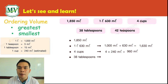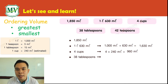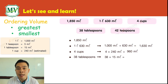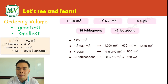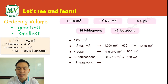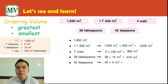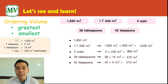Next, 38 tablespoons: 1 tablespoon equals 15 milliliters, so 38 multiplied by 15 equals 570 milliliters. Next, 42 teaspoons: 1 teaspoon equals 5 milliliters, so 42 times 5 equals 210 milliliters.